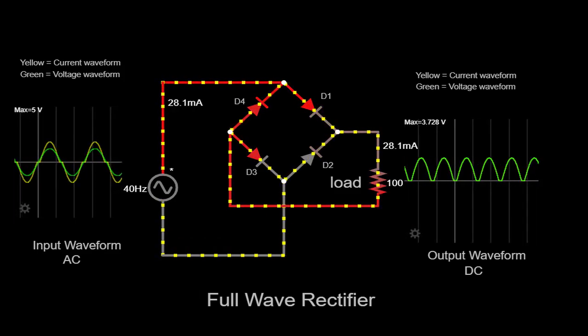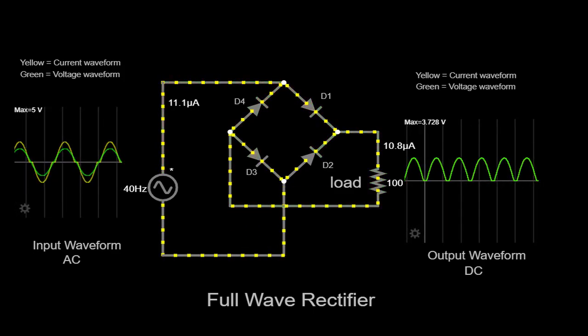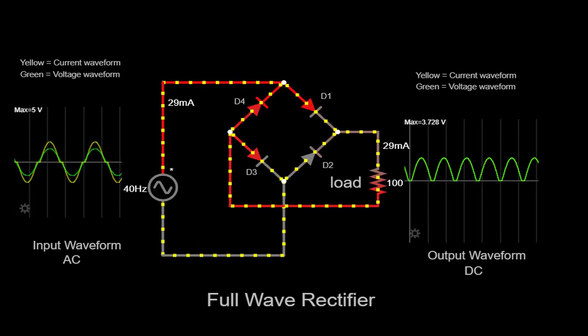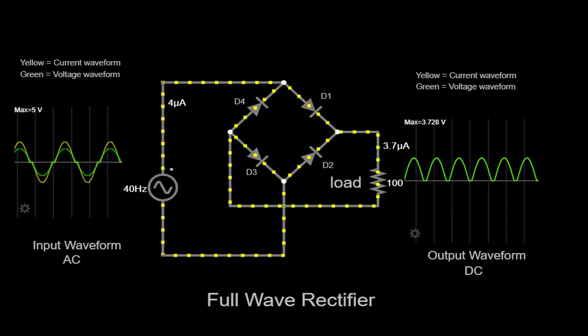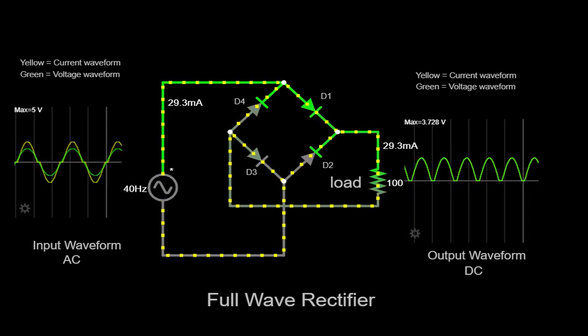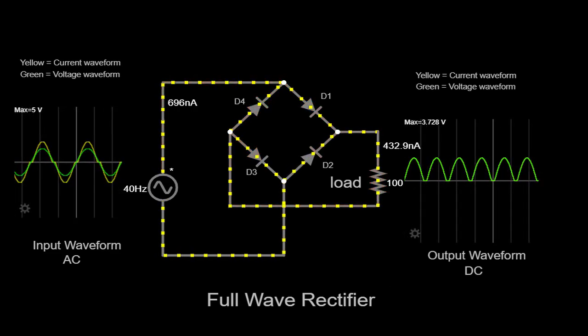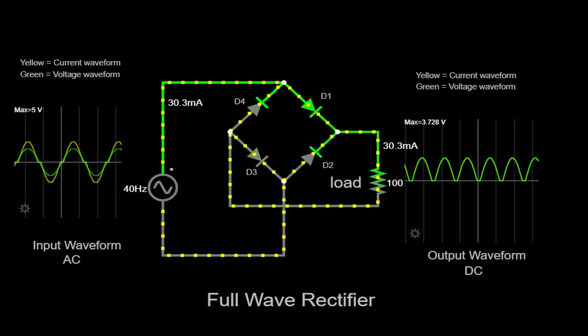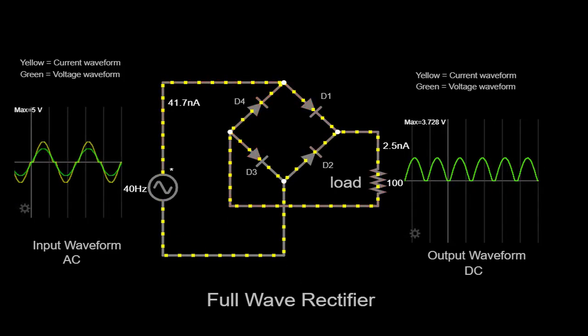Throughout this video, we have witnessed the functioning of the full-wave rectifier through our simulator. By visualizing the input and output waveforms on the scope, we have seen the transformation of the AC input into a rectified DC output. The bridge rectifier circuit, consisting of diodes D1, D2, D3, and D4, plays a pivotal role in allowing current to flow in one direction while blocking it in the reverse direction.